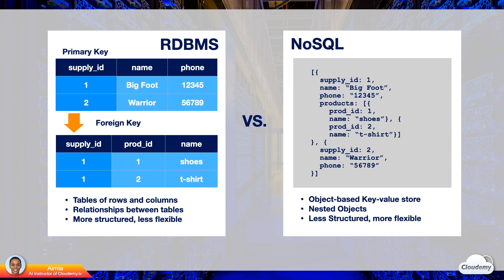NoSQL databases use the object-based key-value store. A record is regarded as an object which can have multiple key-value pairs and nested objects. In a relational database, different types of entities are stored in different tables, whereas in a NoSQL database, nested objects allow multiple entities and their relationships to be captured in one record. For example, a supplier record with supplier ID, name, contact info, and a list of product objects with product ID, name, and other product info. Each supplier can have different structures of attributes. NoSQL databases are less structured — you don't need to define a fixed structure at the beginning. It is more flexible and scalable to fit the ever-changing shape of your data store.